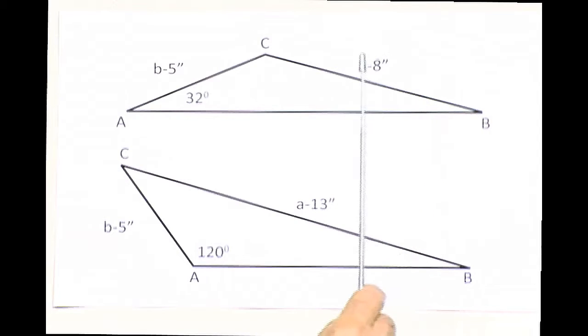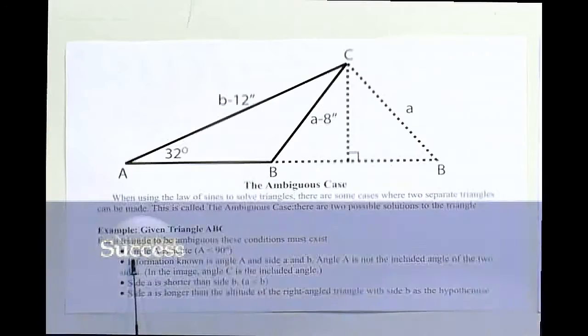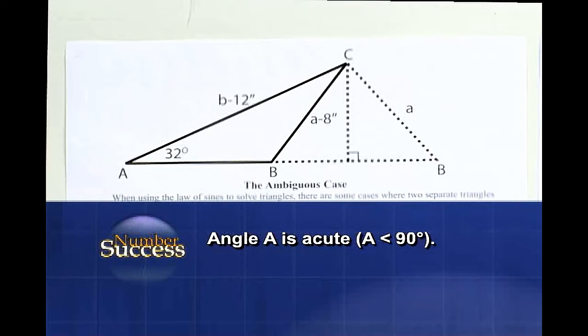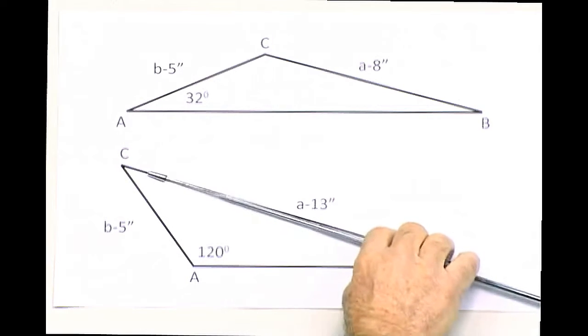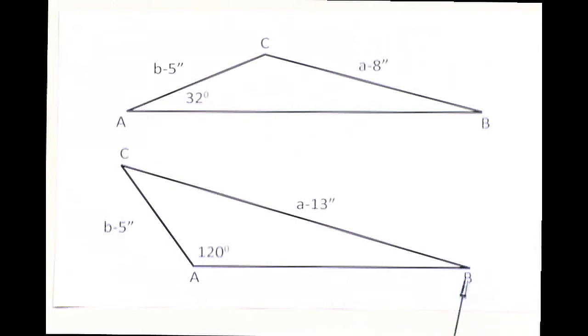And on this side over here, it says angle A is acute, less than 90. This is less than 90, but this is more than 90. Again, you see that side A is long and B is short. So you can solve for angles B and C with this triangle.